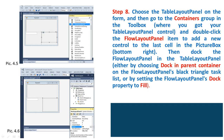Step 8: Choose the table layout panel on the form and then go to the Containers group in the toolbox where you found your table layout panel control. Double-click the Flow Layout Panel item to add a new control to the last cell in the bottom right. Then dock the flow layout panel in the table layout panel either by choosing Dock in Parent Container from the flow layout panel's black triangle task list, or by setting the flow layout panel's Dock property to Fill.